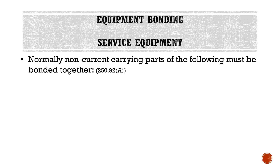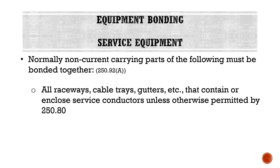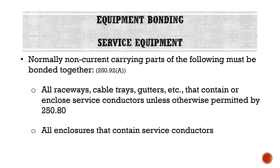Starting at equipment bonding, we begin at the electrical service — the service equipment. Normally non-current-carrying parts of the following must be bonded together: all raceways, cable trays, gutters, etc., that contain or enclose service conductors (unless otherwise permitted by 250.80), and all enclosures that contain service conductors. Unless accepted by 250.80, if any metallic raceway or enclosure contains service conductors, all of those have to be bonded together.